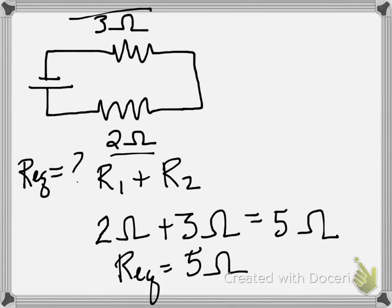Okay, so we know that we just add them up, and 2 ohms plus 3 ohms equals 5 ohms. That's the equivalent resistance of the circuit. That couldn't really be any easier.